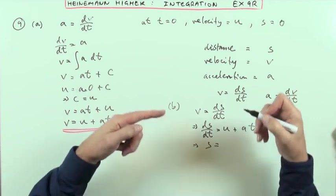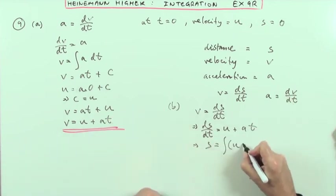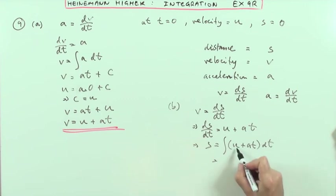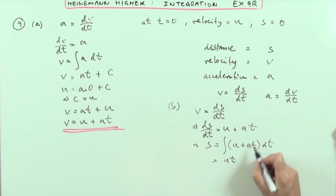Well that means that ds by dt is u plus at. So going back up a step, I would integrate that, u plus at dt. Now again, s and t are the variables, u and a are constants. So that constant term would go back up to the linear term. t would go back up to t squared, and it would be a half times a times that, plus there may have been some other constant at the end.